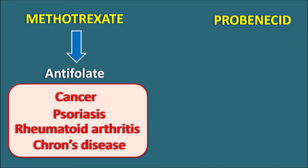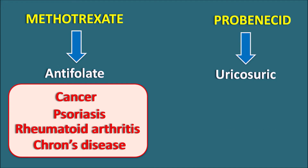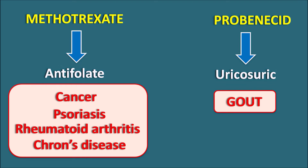On the other hand, Probenecid is one of the uricosuric drugs. That means this drug increases uric acid excretion, which is why it can be used in the treatment of gout. Gout is an inflammatory condition produced by elevated levels of uric acid. In gout arthritis, Probenecid can decrease uric acid levels by increasing uric acid excretion. In this way, these two drugs have different clinical uses.